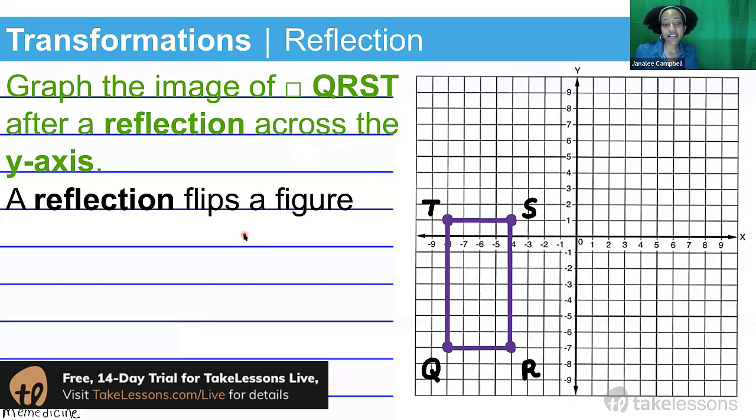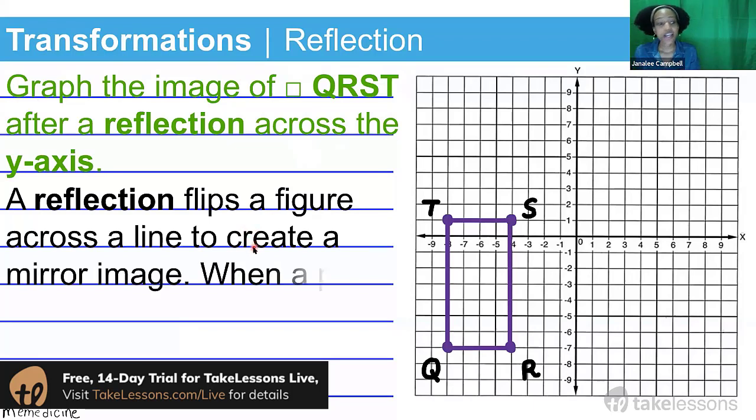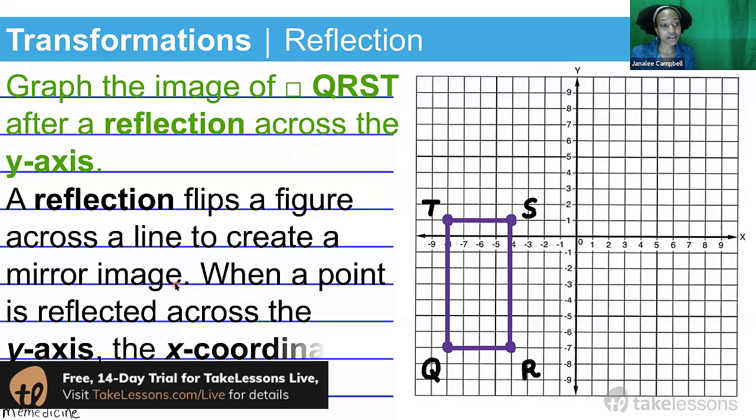A reflection basically flips a figure across a line to create a mirror image. When a point is reflected across the y-axis, all you're going to do is change the sign of its x-coordinate. So we're flipping about this line here, the y-axis line of the two-dimensional coordinate plane.